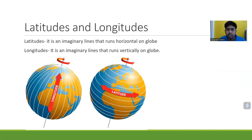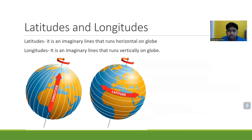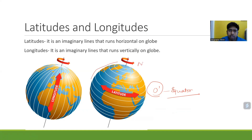Here you can see these are the latitudinal lines and these are the longitudinal lines. Let us discuss about the features of latitude and longitude. First, you can see the equator - the equator is the very first latitudinal line at zero degrees. The equator almost divides Earth into two equal halves. The upper half is known as the northern hemisphere and the lower half is known as the southern hemisphere.